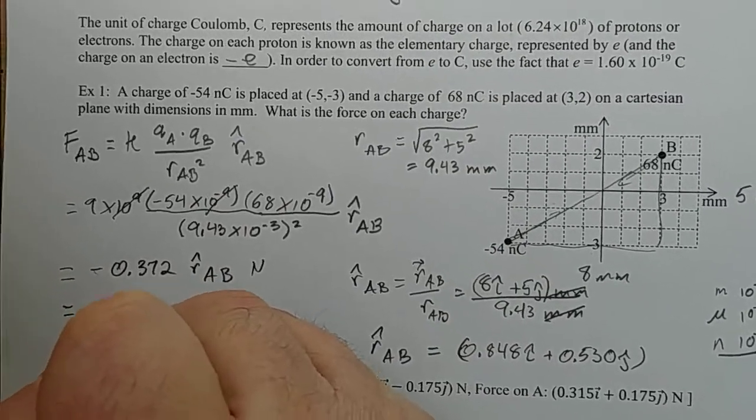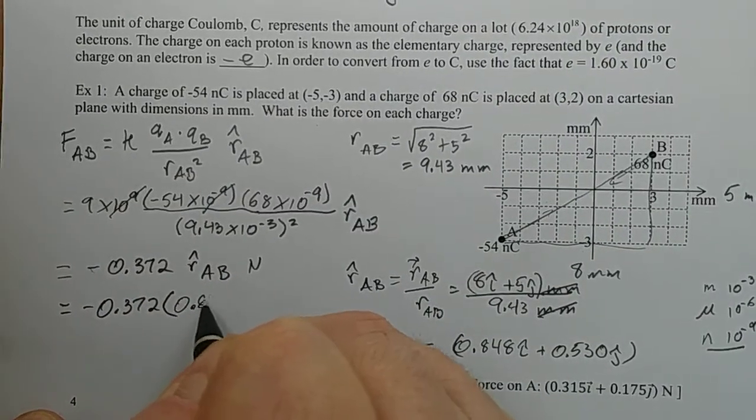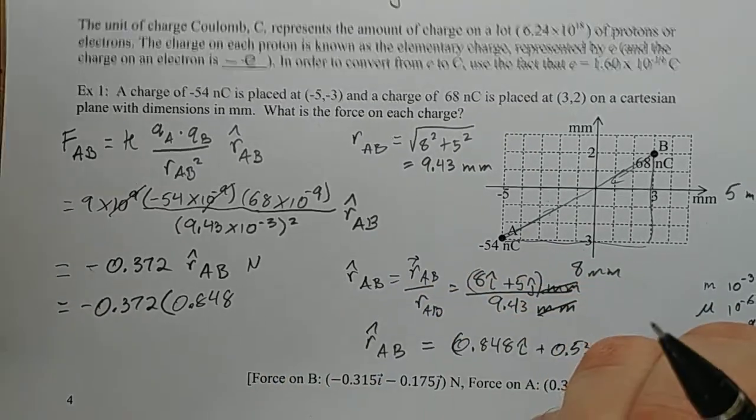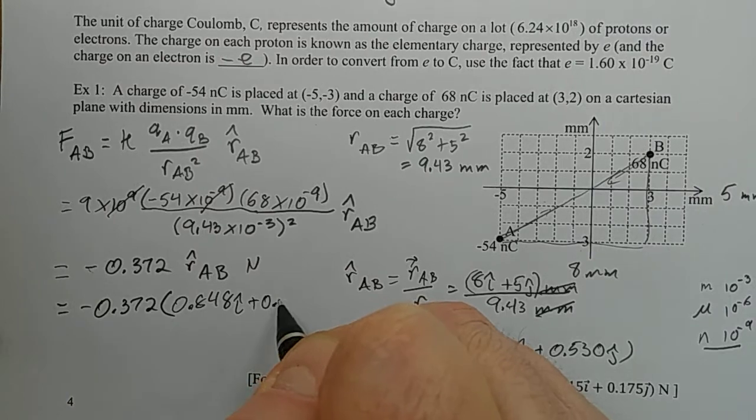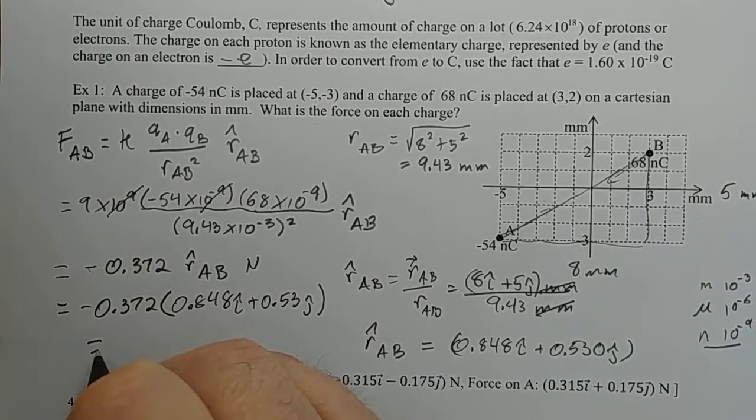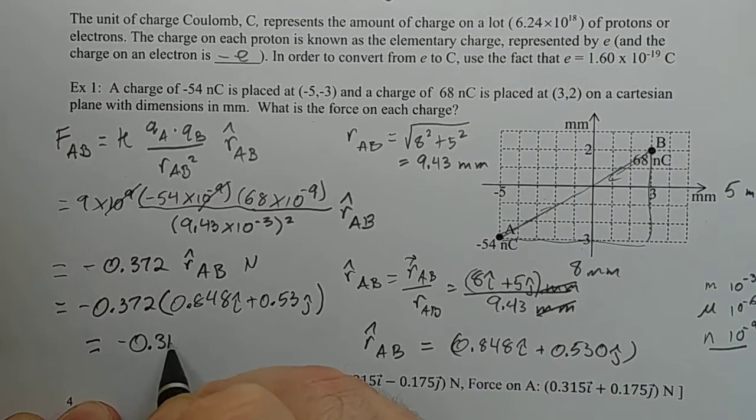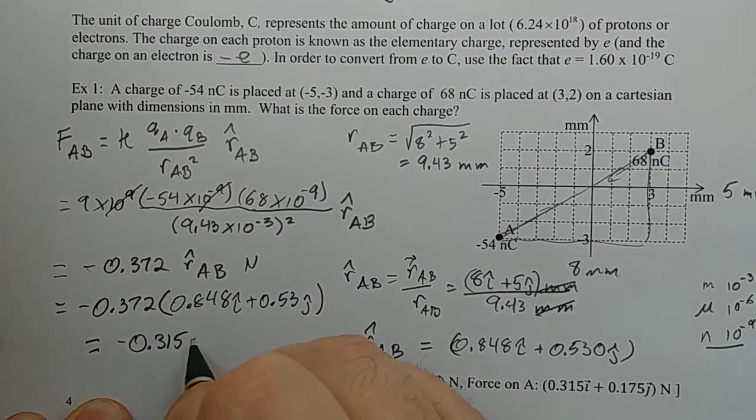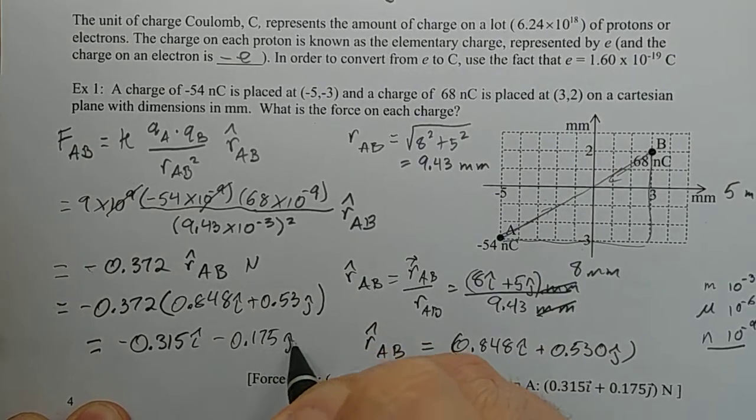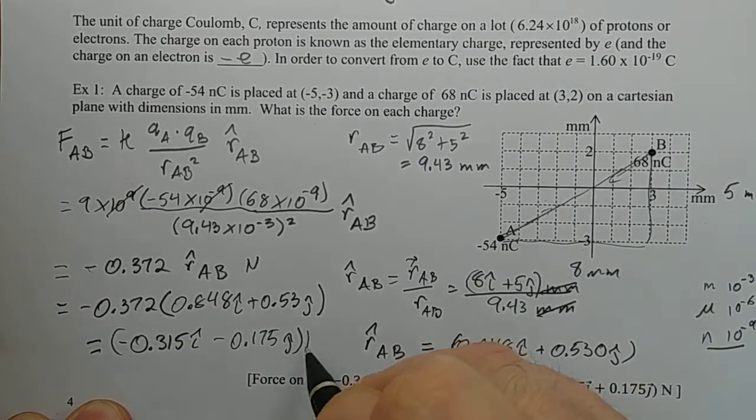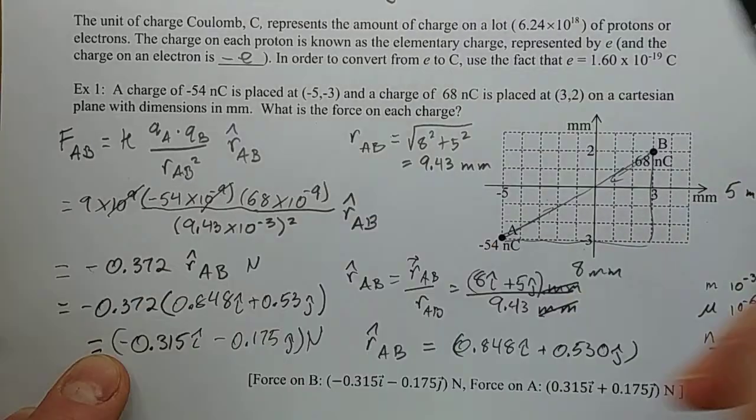So we can take negative 0.372 and we can multiply it by 0.848 i hat plus 0.53 j hat. And we get this beautiful number here, negative 0.315 i hat minus 0.175 j hat newtons. And does that make sense? Let's have a look.